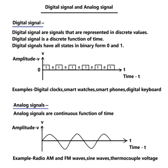Examples of analog signals are radios, FM, AM type, sine waves, thermocouple voltage output, etc.